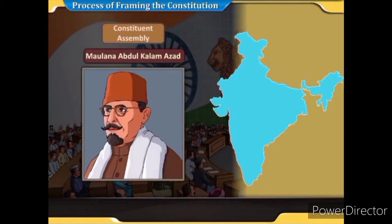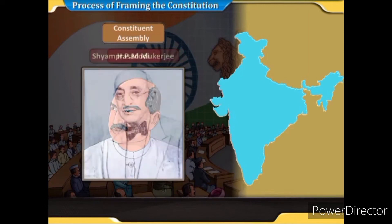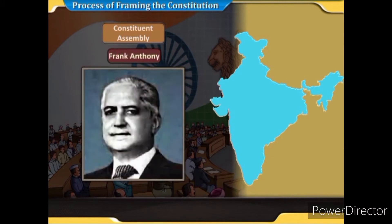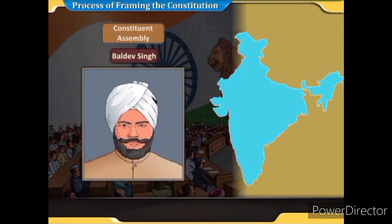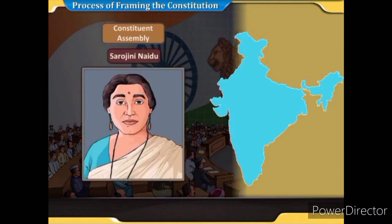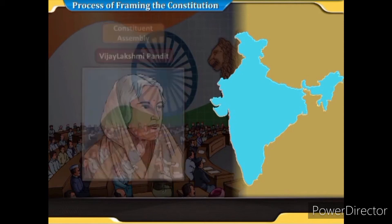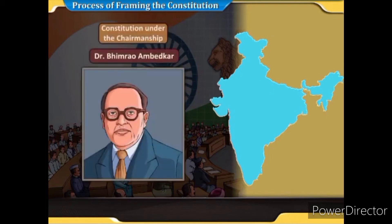Notable members included Jawaharlal Nehru, Sardar Vallabhai Patel, Maulana Abdul Kalam Azad, Shyam Prasad Mukherjee, H.P. Modi, H.V. Kamath, Frank Anthony, Kanaya Lal Munshi, Krishna Swami Iyer, Baldev Singh, and women representatives Sarojini Naidu and Vijay Lakshmi Pandit. Dr. Rajendra Prasad was the president of the Constituent Assembly.